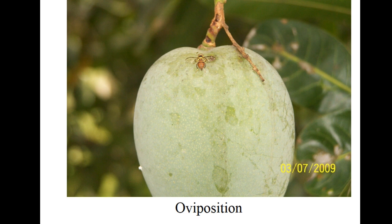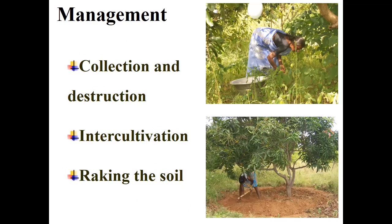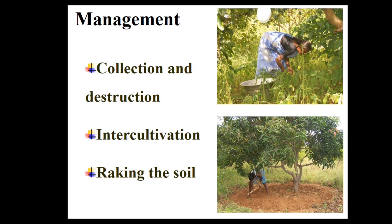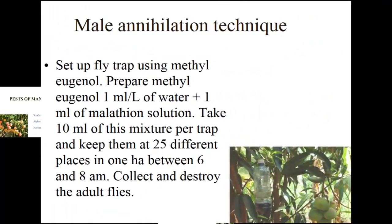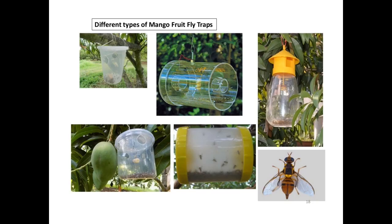The emergence of fruit fly starts from April onwards; maximum population is recorded during May to July, coinciding with fruit maturation. Control practices: prior to harvest, collect and dispose of infested and fallen fruits to prevent further multiplication. Plough the orchard during November to December to expose pupae to sunlight and heat. If infestation is heavy, apply bait splash on tree trunk once or twice at weekly intervals — mix 100 grams of jaggery in 1 liter of water with 1–2 ml deltamethrin.